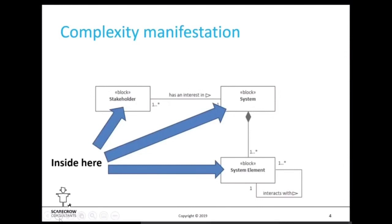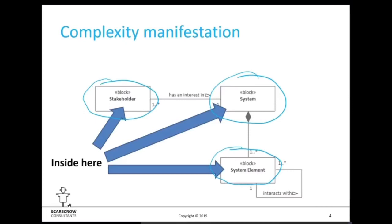When we look at complexity, consider a basic system. The obvious place where complexity occurs is within that system at the system level, but also within the system elements. We also have to bear in mind that stakeholders bring their own complexities. Each of these entities — system elements and stakeholders — is going to have their own inherent level of complexity.